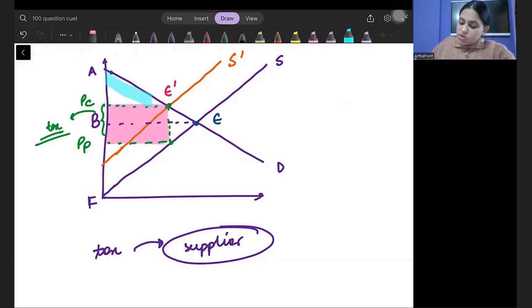This becomes my consumer surplus. And this becomes my producer surplus. Clear?